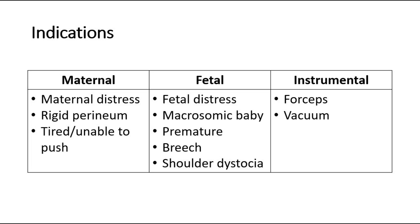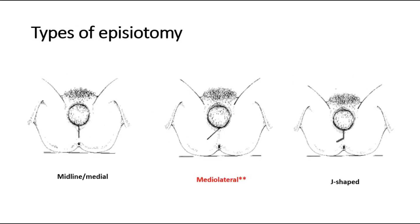There are three main types of episiotomy incisions. The first picture shows the midline or medial episiotomy incision. The second picture is the medial lateral incision, which is the most preferable and most commonly used method. The third type is the J-shaped incision.